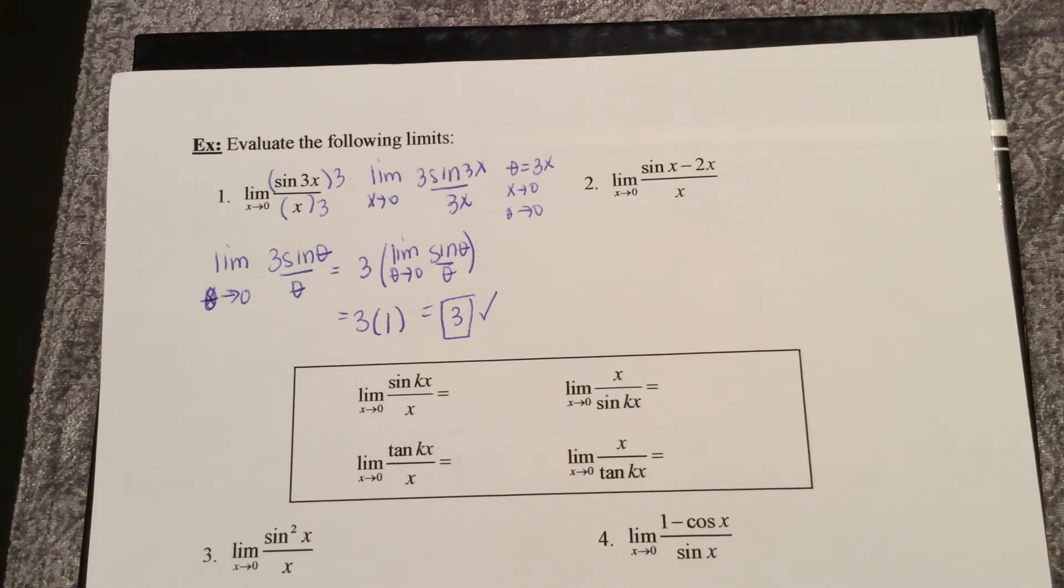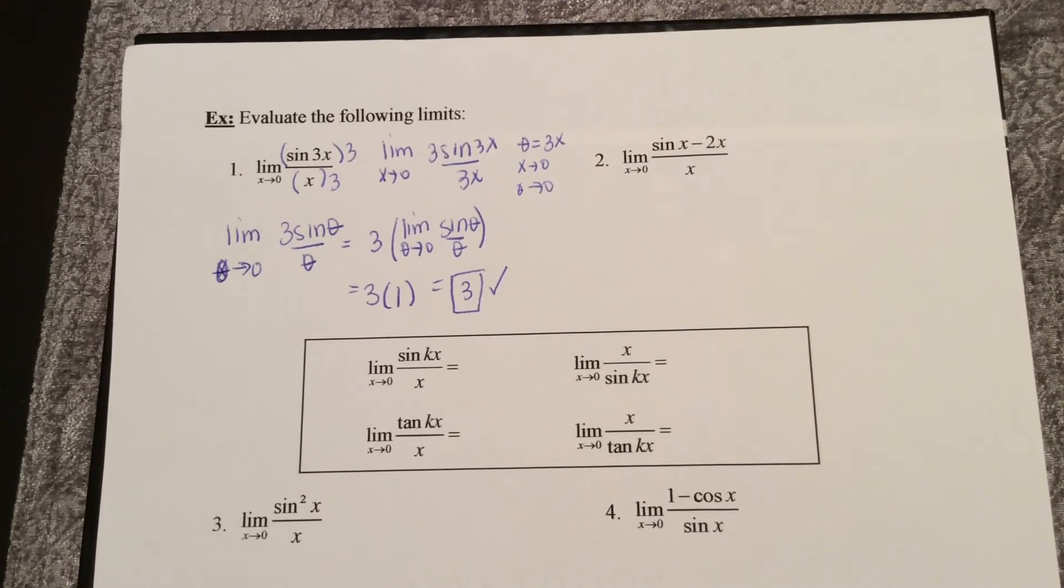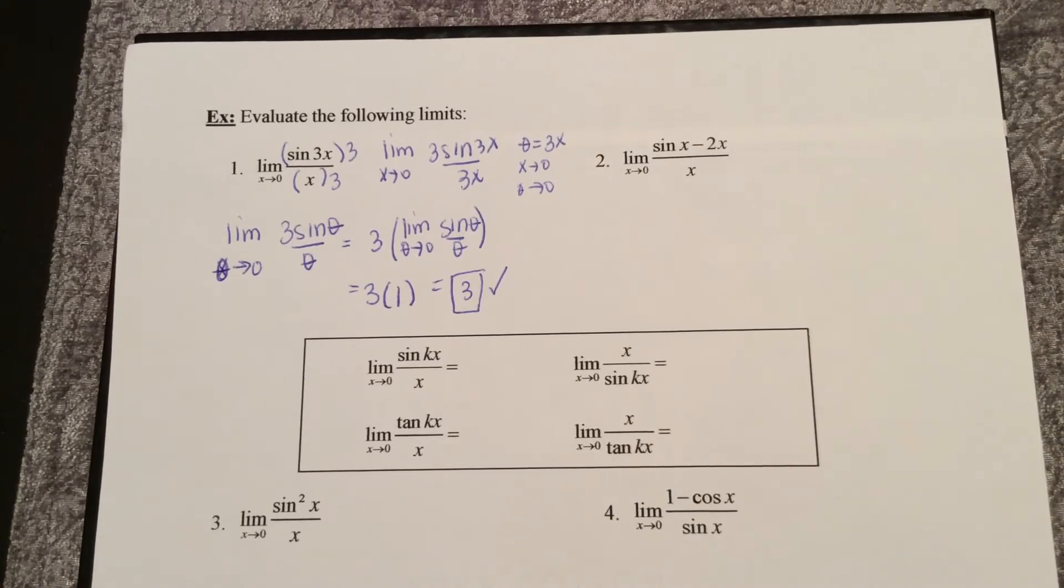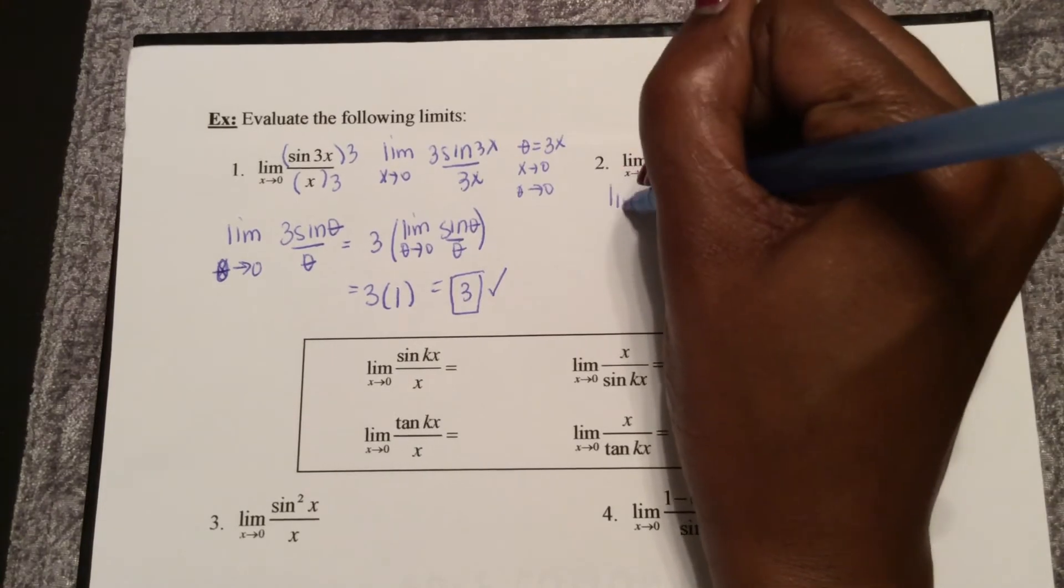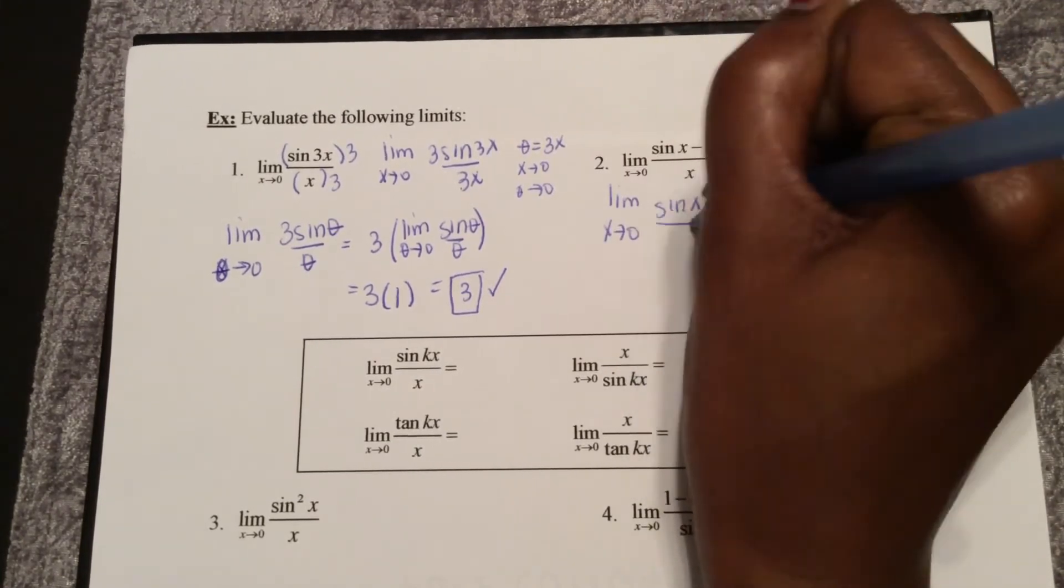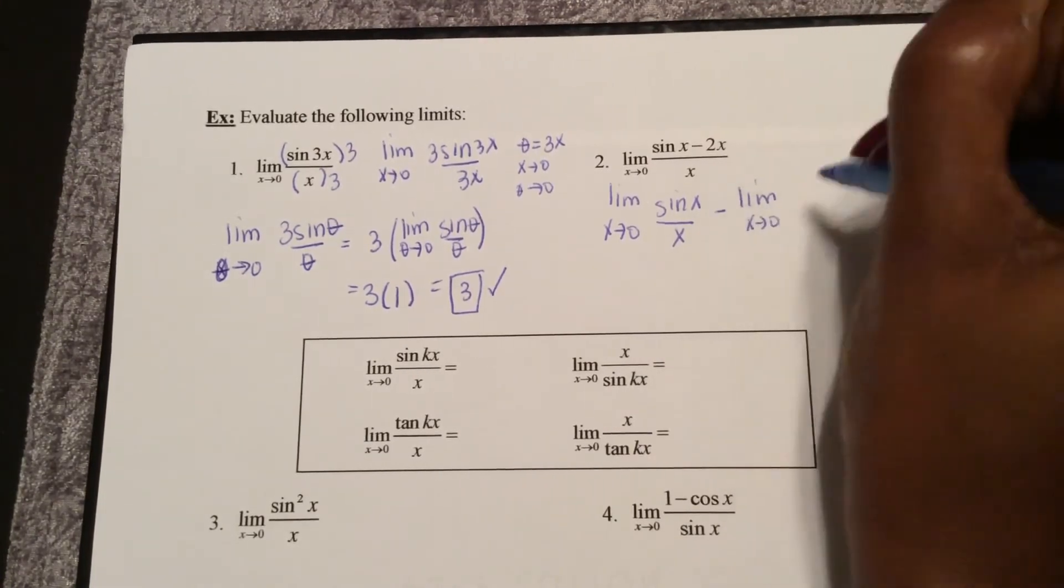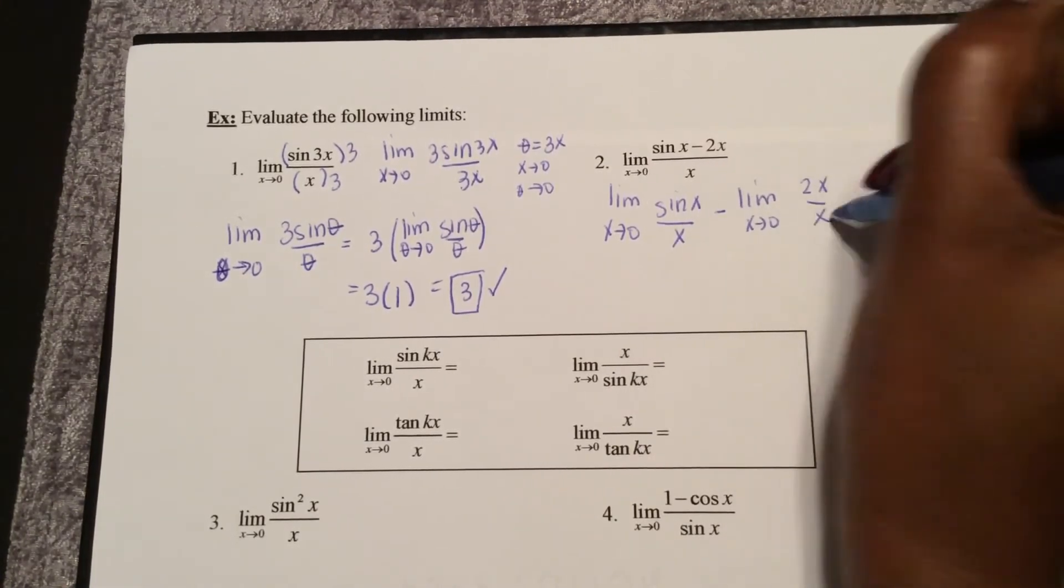So let's check out number 2: sine x minus 2x all over x, limit as x approaches 0. How can I manipulate this and apply it to some limits that we know already? So I can break this up into 2 limits: the limit of sine x over x minus the limit of 2x over x.